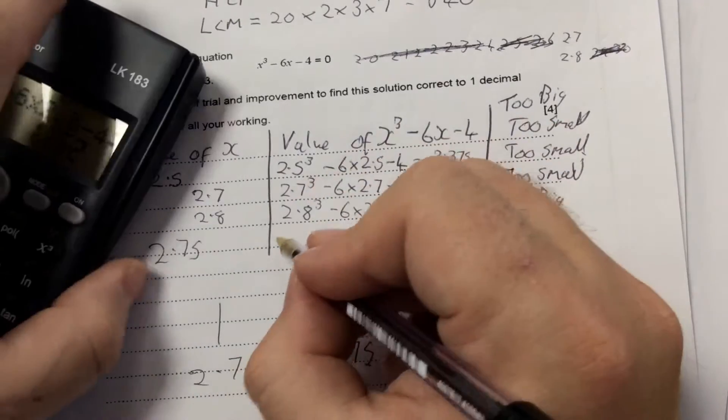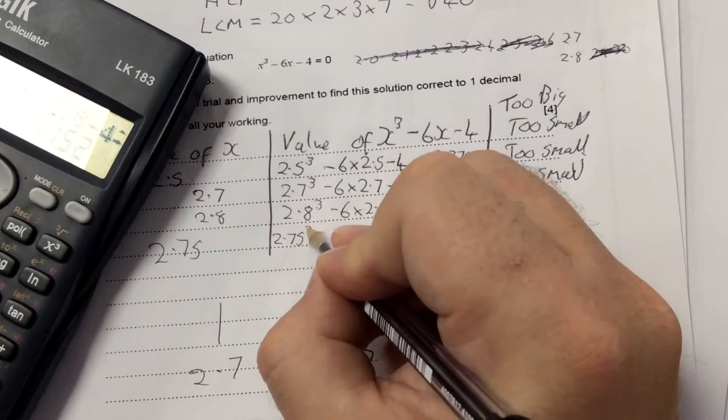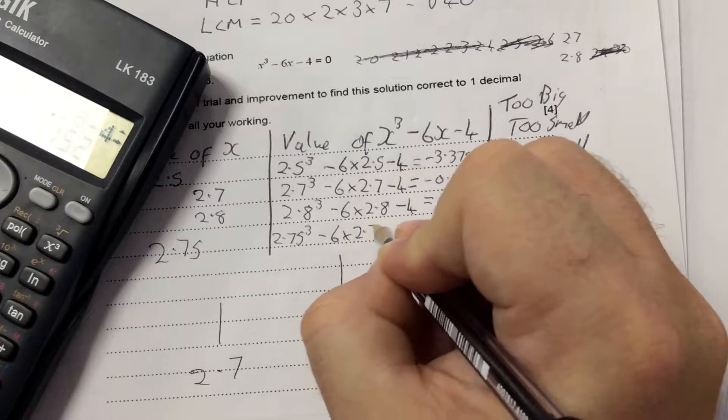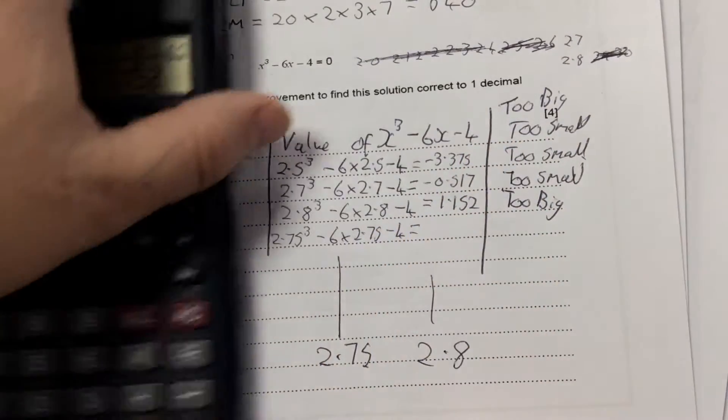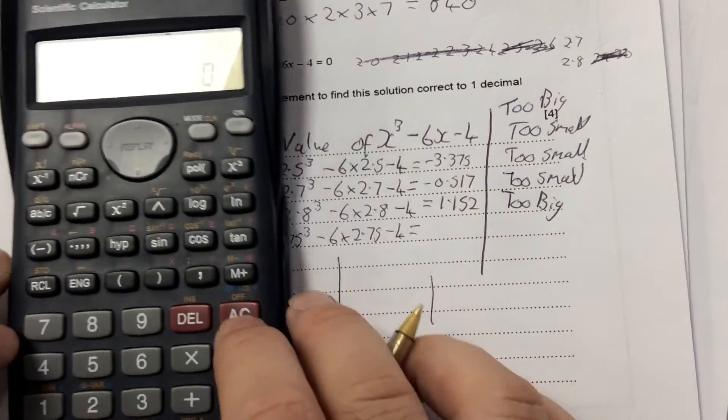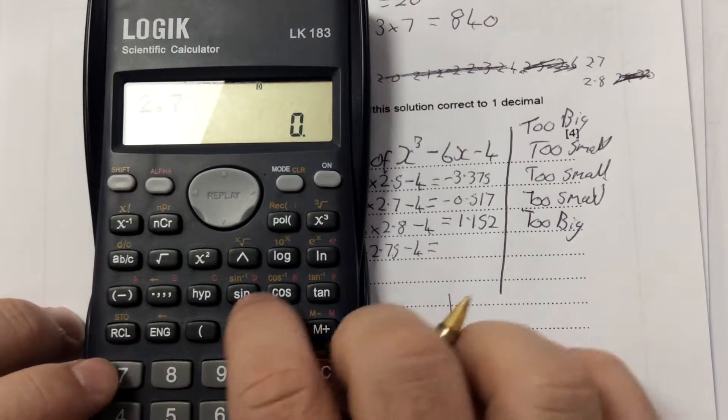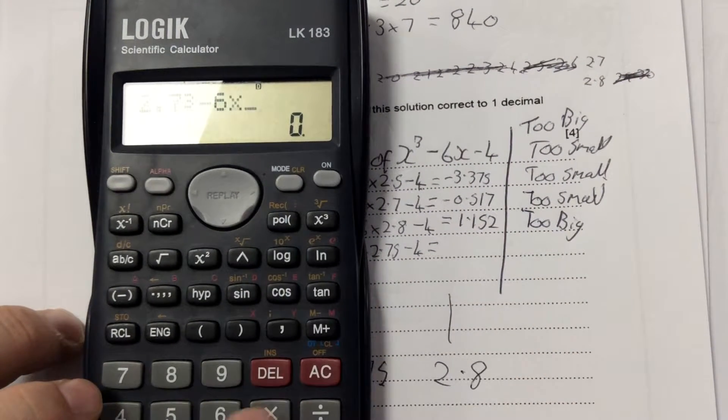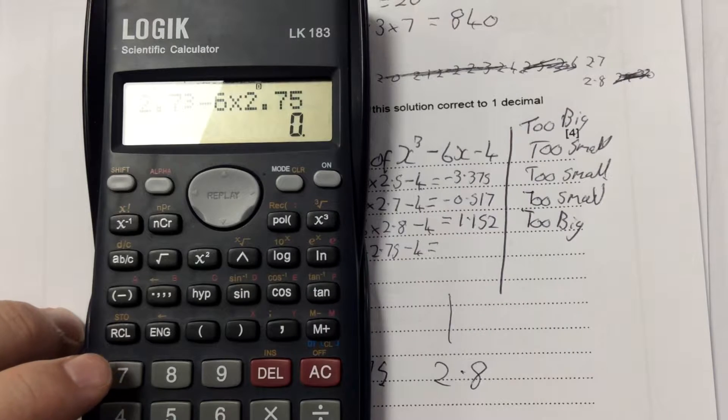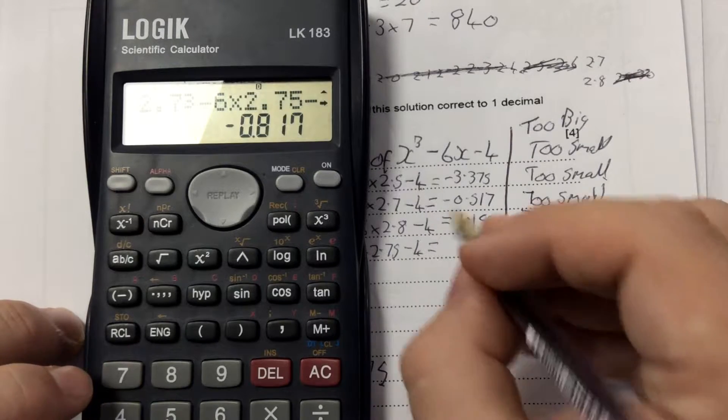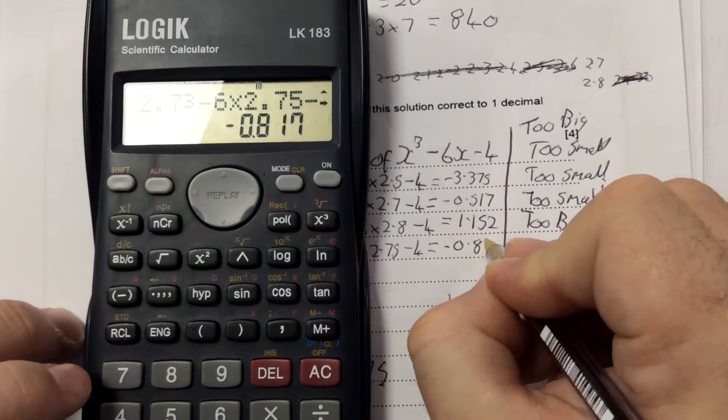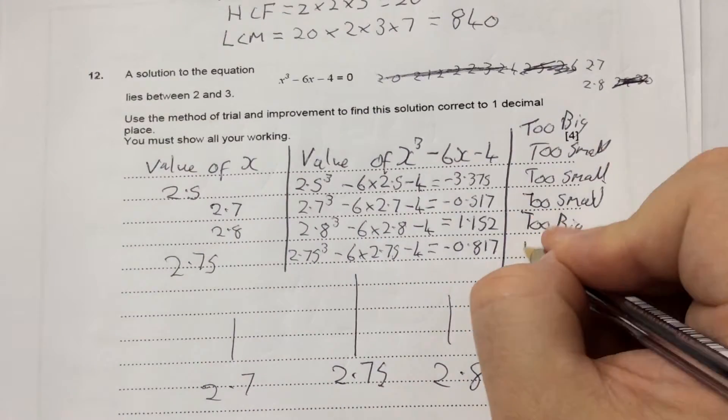So I put 2.75 in instead of them. And when I do that, it's 2.75³ - 6 × 2.75 - 4, which equals -0.817, which is too small.